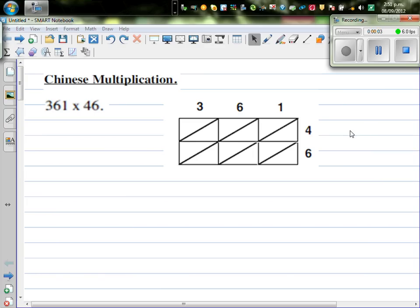In this video I'm going to show you a multiplication method called Chinese multiplication. So this is 361 times 46. You write 361 on the top and 46 on the right.